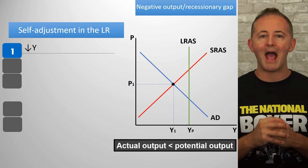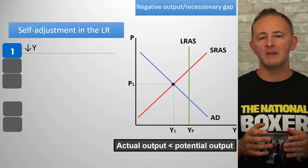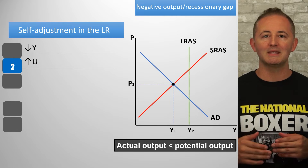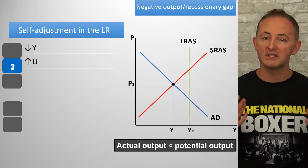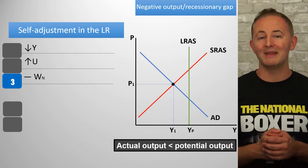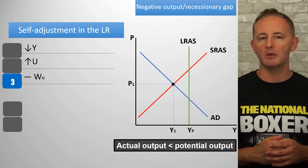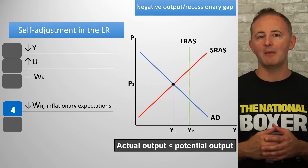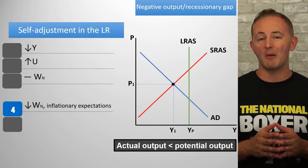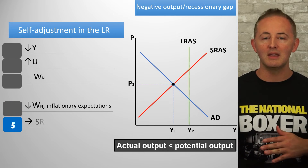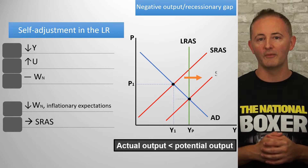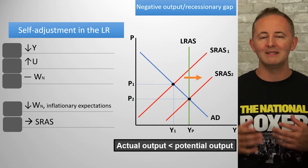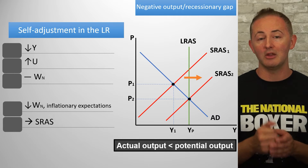First, actual output is less than potential output, meaning we have rising unemployment since fewer workers are needed when output falls — unemployment is higher than the natural rate due to cyclical unemployment. In the short run, nominal wages remain unchanged even though unemployment is higher. But eventually, in the long run, nominal wages decrease and firms are able to hire additional workers. The lower nominal wages cause the SRAS curve to shift to the right until it intersects with the AD and LRAS curve. Thus, the economy self-corrects and is once again in long run equilibrium, where unemployment equals the natural rate and actual output equals potential output.